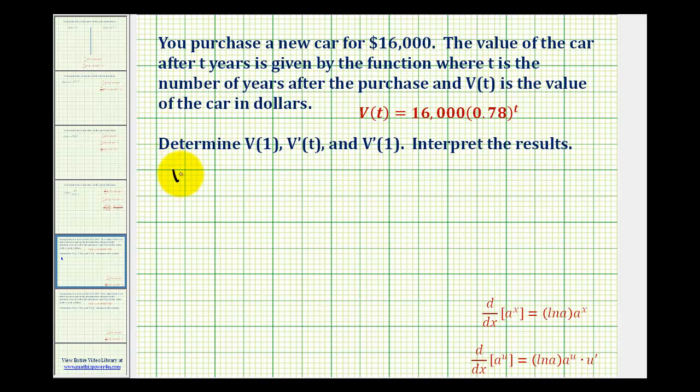So to determine V(1), we'll replace t with one in the given function. So we'd have 16,000 times 0.78, which is $12,480. This tells us the value of the car after one year is $12,480.